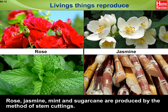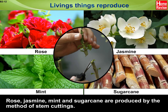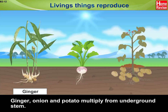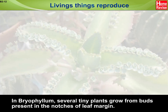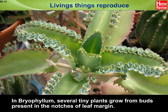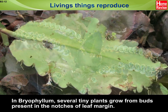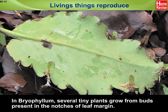Rose, jasmine, mint, and sugarcane are produced by the method of stem cuttings. Ginger, onion, and potato multiply from underground stems. In bryophyllum, several tiny plants grow from buds present in the notches of the leaf margin.